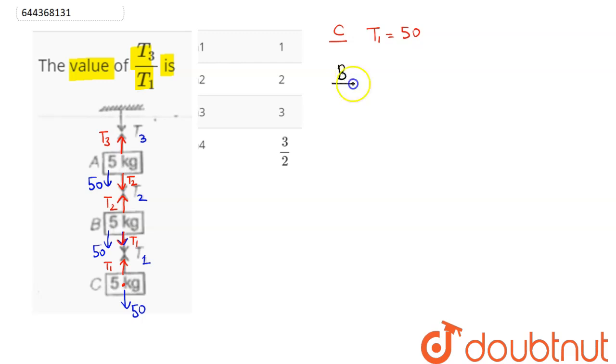Now for B block we can say T2 upwards and 50 plus T1 downward as the system is in equilibrium. Therefore force balance gives us 50 plus T1, which is 50, so this comes as 100 Newton.